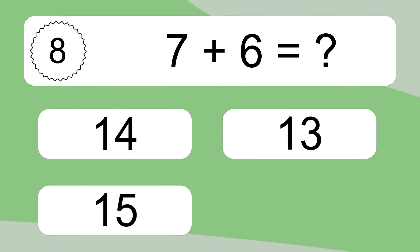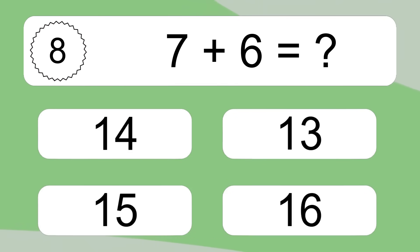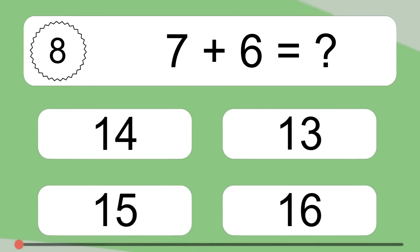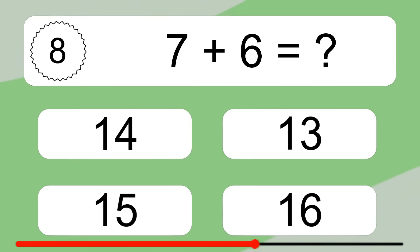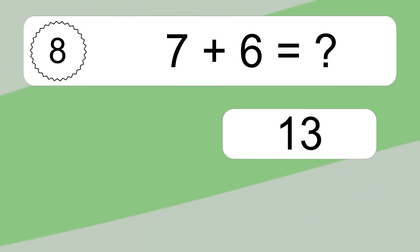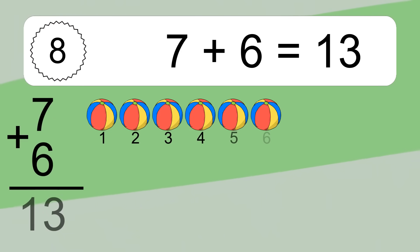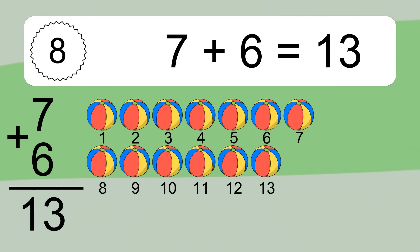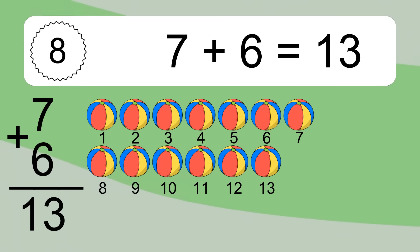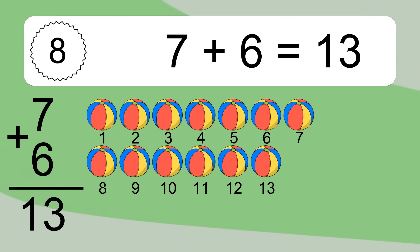7 plus 6 equals what? 7 plus 6 equals 13. Let's count it: 1, 2, 3, 4, 5, 6, 7, 8, 9, 10, 11, 12, 13.